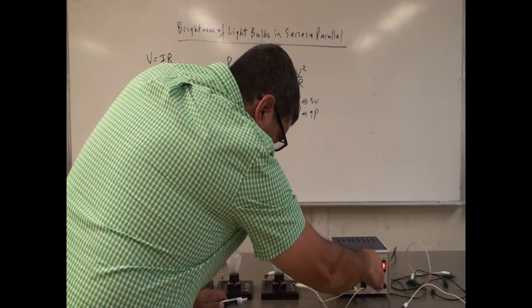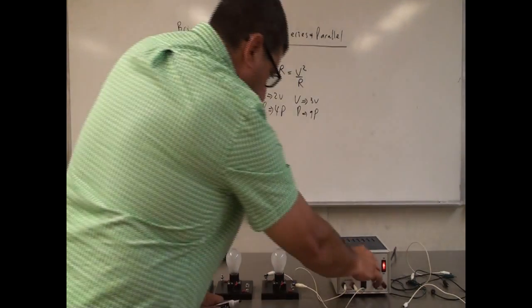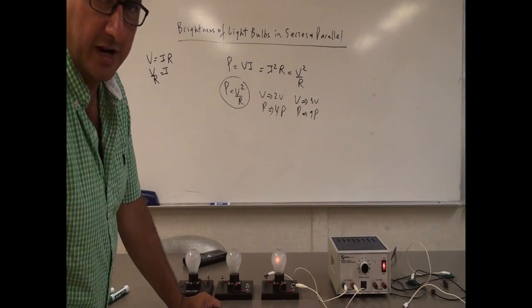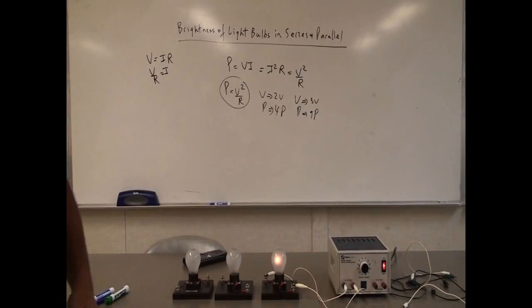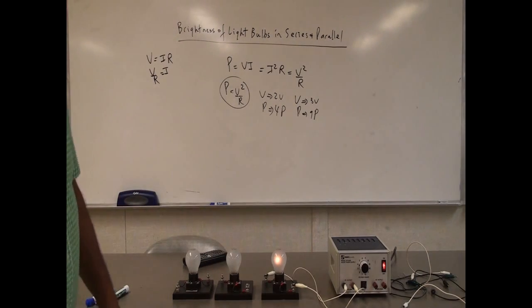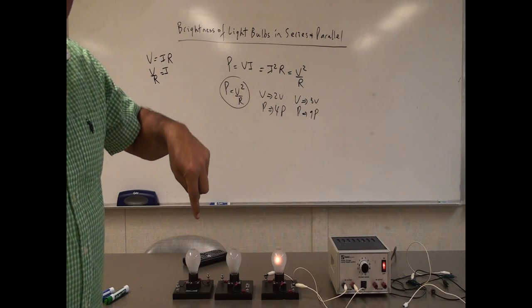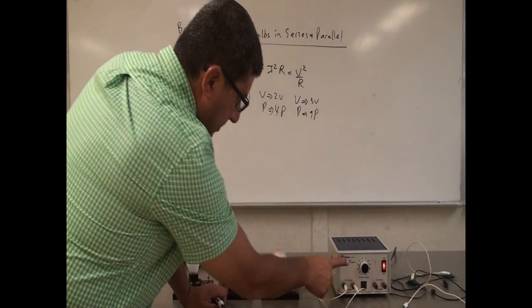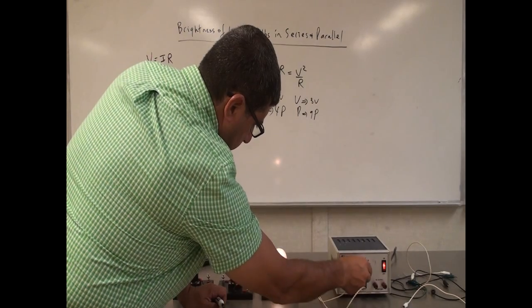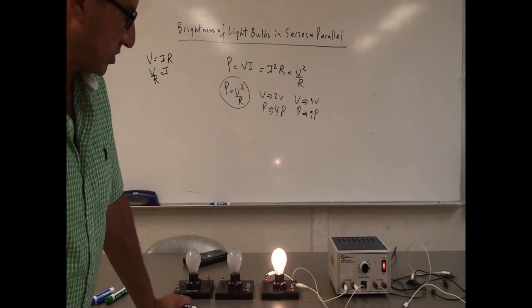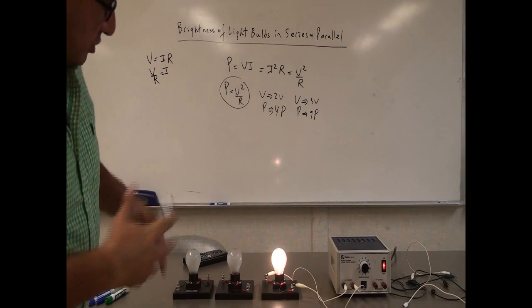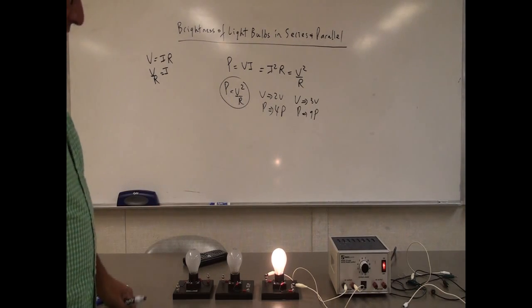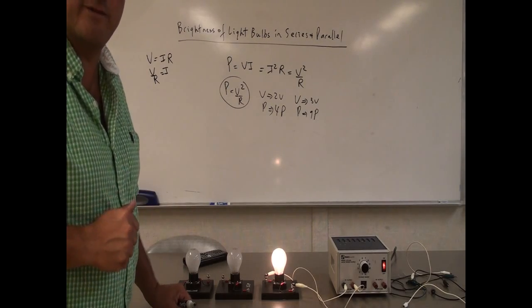One volt won't even power it on. At two volts you still can't see anything. Three volts — you can see it's shining, but barely. Four volts you can see something — it's very dim. So what's going to happen if I go to eight volts? If I double the voltage from four to eight, it should become four times as bright. This is four volts. This is eight volts — I'm doubling the voltage, so it should be four times as bright. You can kind of tell it got quite a lot brighter. You can't really tell it's exactly four times as bright, but it makes sense that it's possibly around four times as bright.